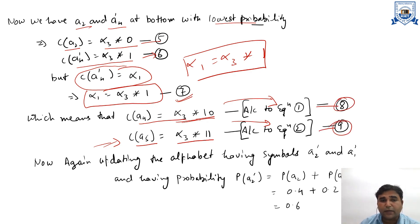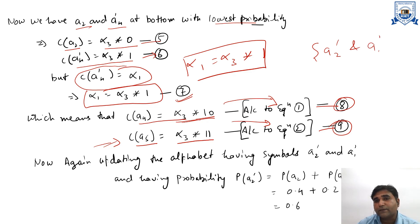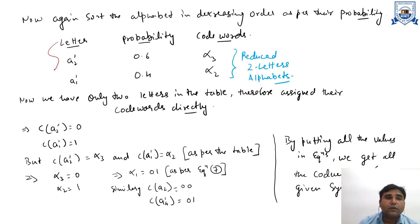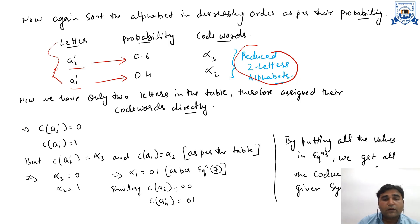Updating the table, we now have only two symbols: A2-dash and A1-dash. The probability of A2-dash is the sum of probabilities of A2 and A4-dash, so the probability of A2-dash is 0.6. Sorting, we have A2-dash with probability 0.6 and A1-dash with probability 0.4. The codewords for A2-dash and A1-dash are alpha-3 and alpha-2 respectively in this reduced two-letter alphabet.